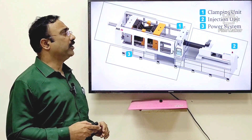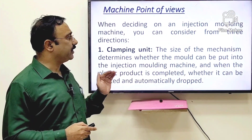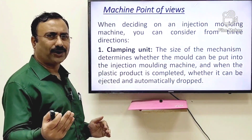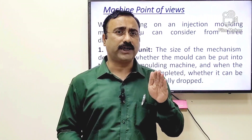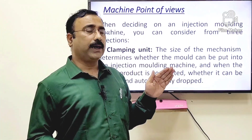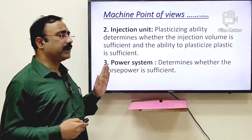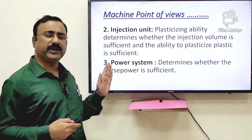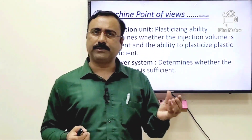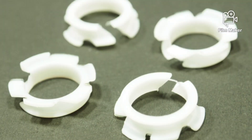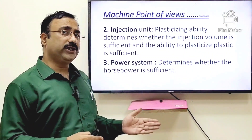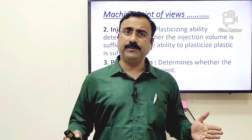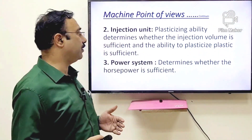In the clamping unit, we have to consider the size of the clamping force. If the product dimensions are smaller, you need a lower clamping force; if the product is large, you need more clamping force. For example, I have seen many companies producing small products like 38mm diameter caps but using bigger machines — in that case you are wasting energy and adding unnecessary cycle time, which makes your production output much lower.